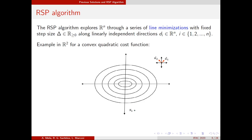The RSP algorithm explores the line defined by x1 and direction d1. In particular, it explores points at distance delta along this line in order to find the minimum of the cost function f along this line — in this case x1 star. Then, iteratively, it explores the next direction in the set of directions considered, in this case d2, to find the minimum of the cost function f along that line.